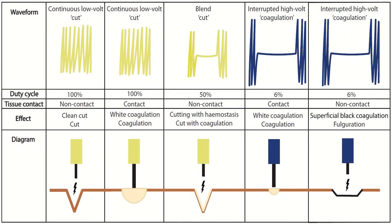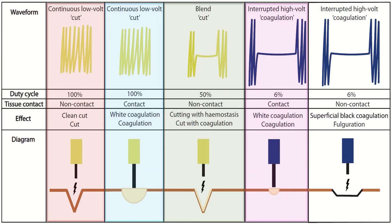This article also describes different waveforms. A continuous low-voltage cut waveform with 100% duty cycle and non-contact produces a clean cut effect. A continuous low-voltage cut with 100% duty cycle and tissue contact produces white coagulation. A blend cut with 50% duty cycle and non-contact produces cutting with hemostasis. An interrupted high-voltage coagulation with 6% duty cycle in contact produces white coagulation. The same high-voltage coagulation at 6% duty cycle but non-contact produces superficial black coagulation or fulguration.